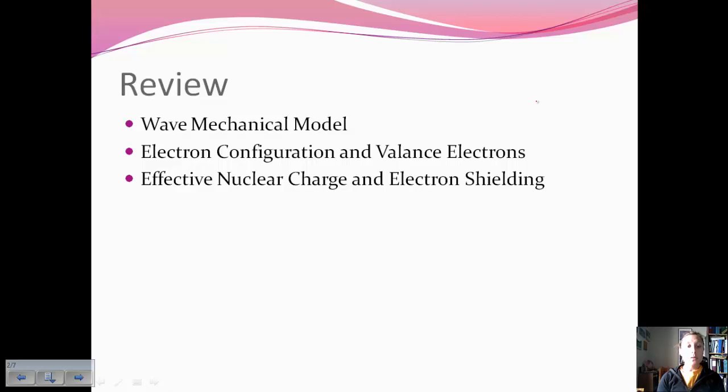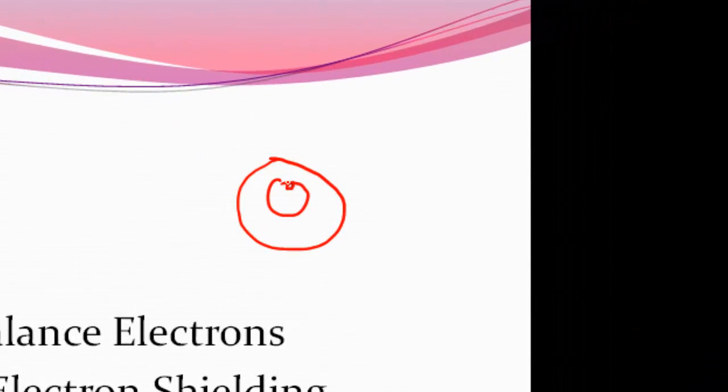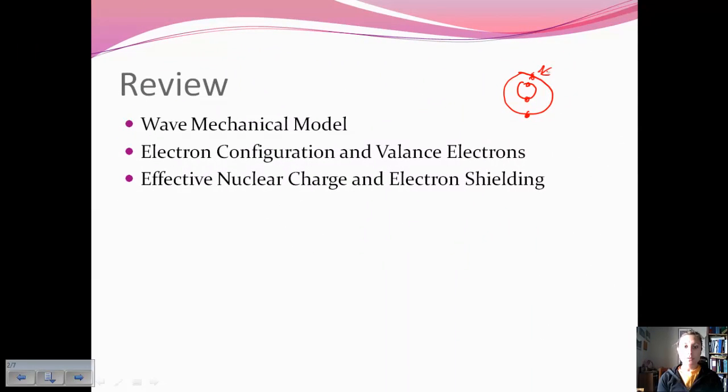Along with this, we're going to include effective nuclear charge, which is the positive pull from the protons that electrons feel. And along with that, electron shielding, which if you look at an example of, let's say, a Bohr model, we know that two electrons fit in the first shell and up to eight in the second shell. And so these first two electrons are very close to the nucleus. They're feeling the pull of the protons more, and they are shielding these outer electrons from the pull of the nucleus. And so those two topics are going to relate to the trends that we're going to discuss today.